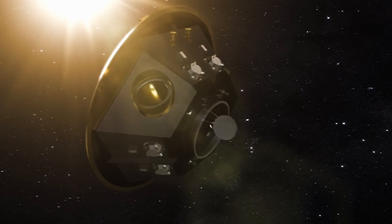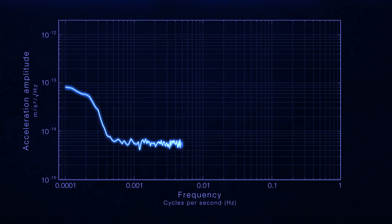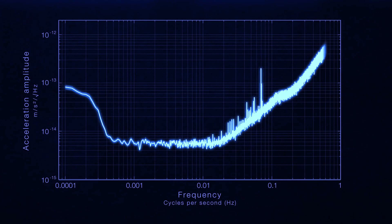The LISA detector, designed to detect gravitational waves at frequencies around 10 to the minus 3 Hz, and the PTA detector, aimed to detect waves at frequencies around 10 to the minus 9 Hz, stand as beacons of hope in the search for cosmic enlightenment.